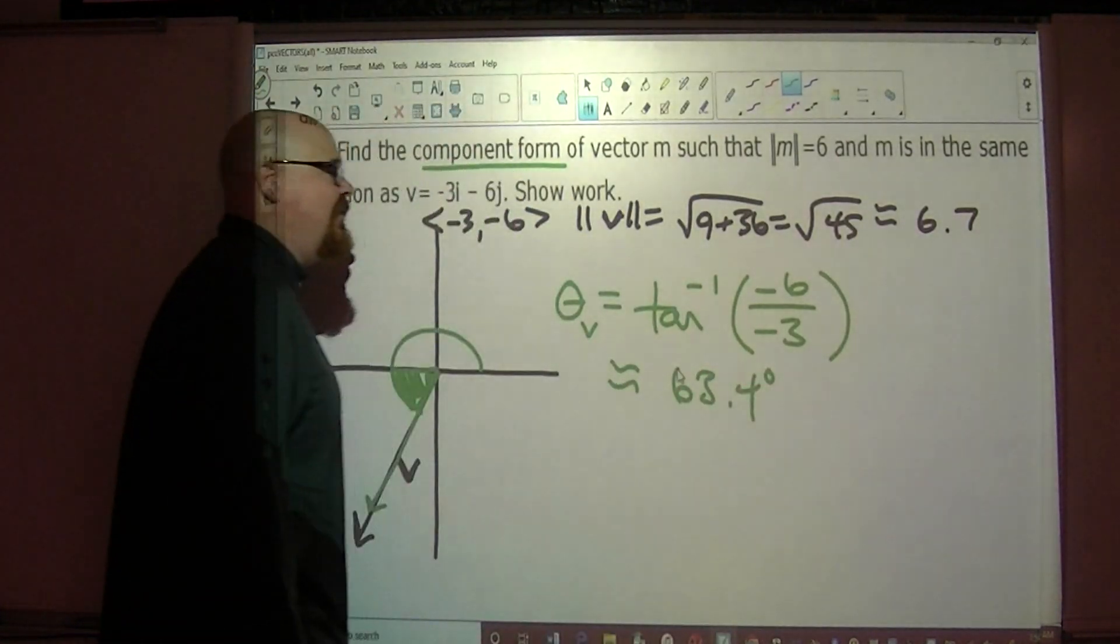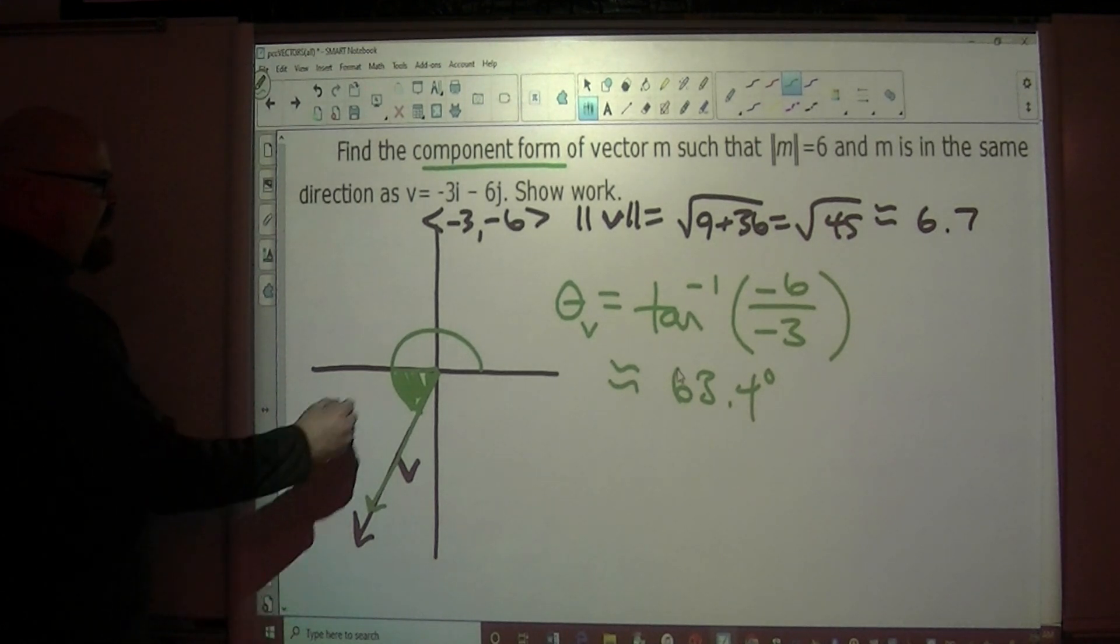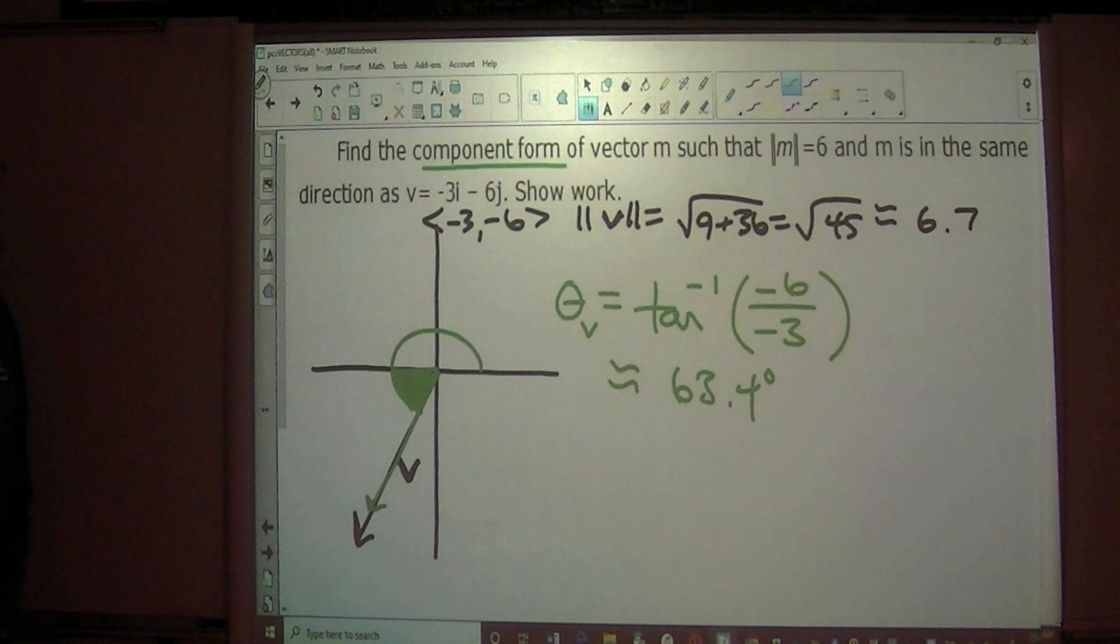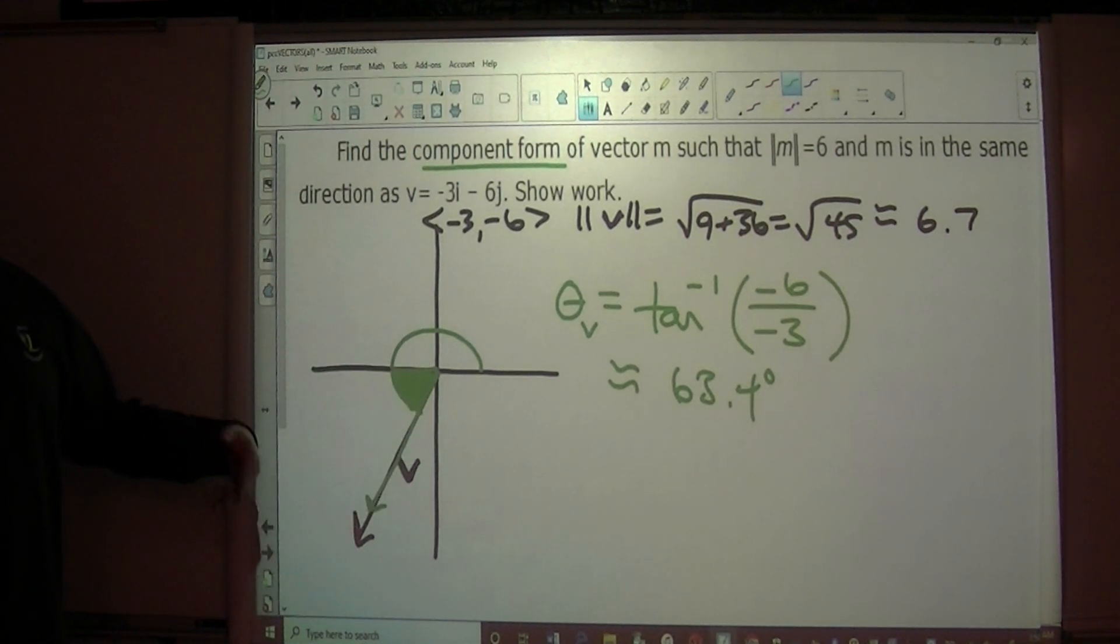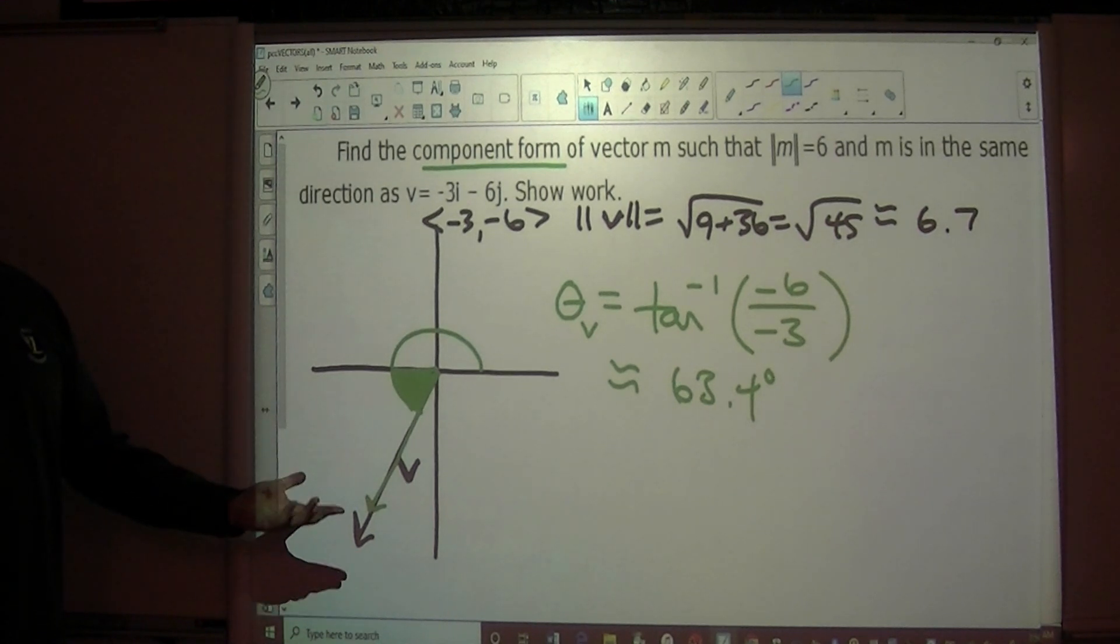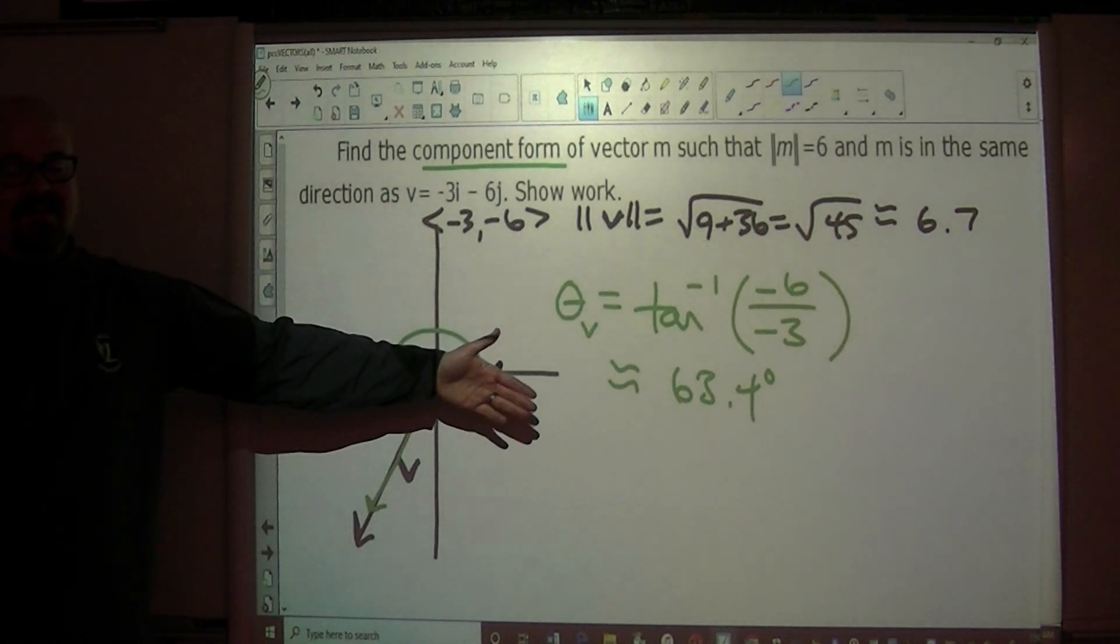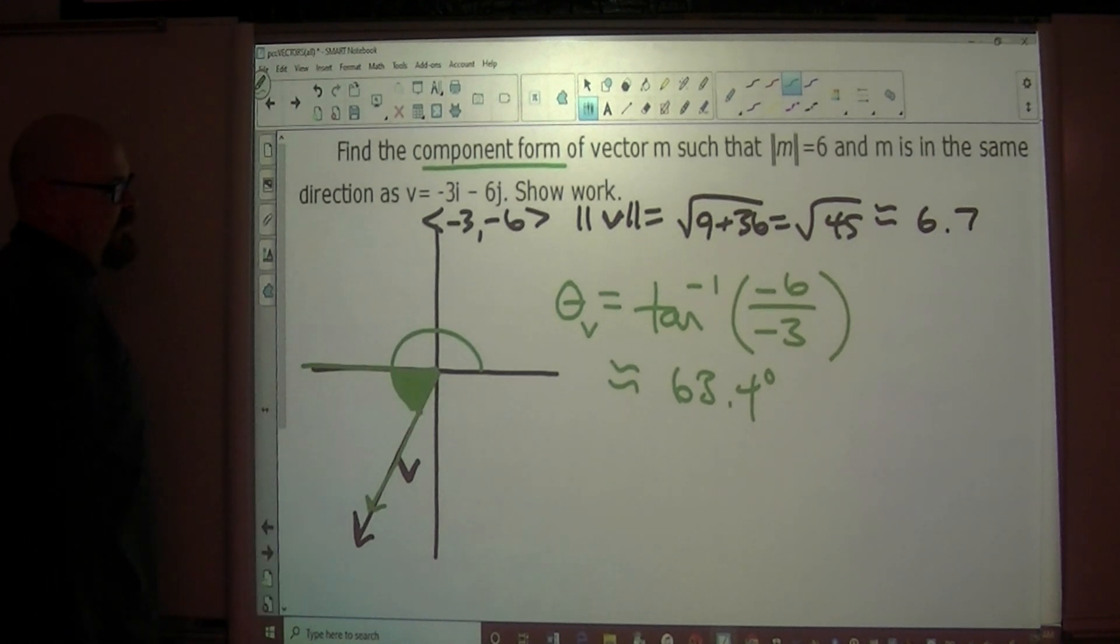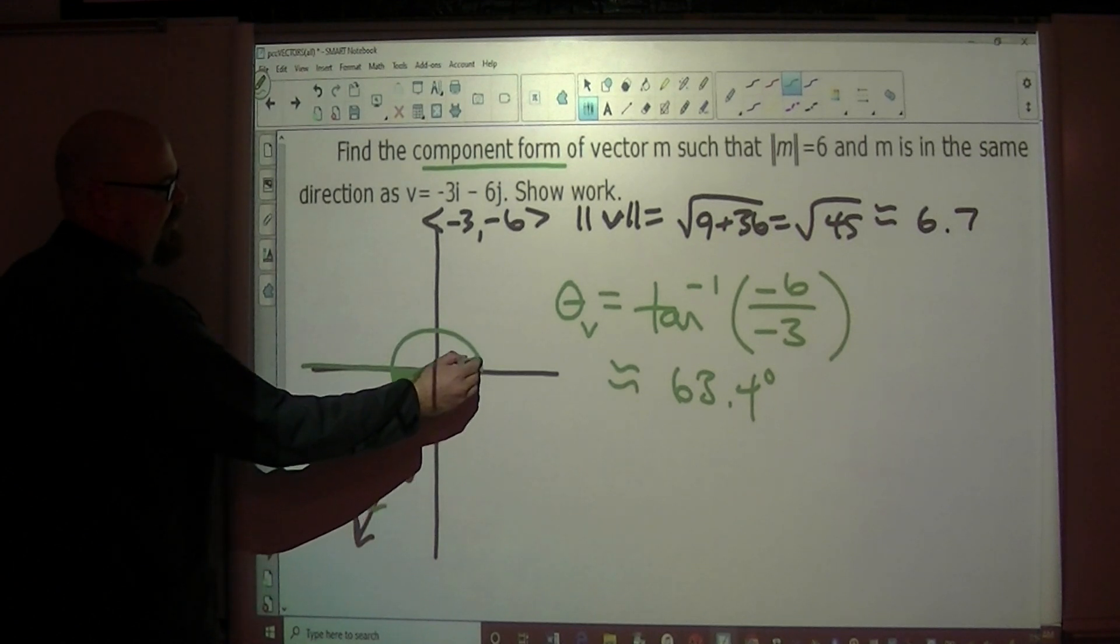Positive 63.4 degrees. Remember that's telling us this angle right here. That's giving us the acute measurement between the vector and the closest x-axis, not the positive x-axis necessarily, but the closest x-axis, which would be over here.